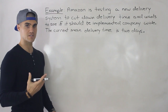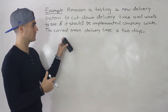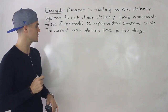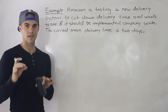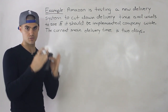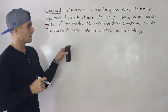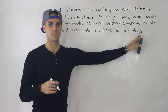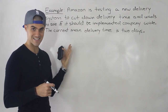Let's do an example. Let's say Amazon is testing a new delivery system to cut down delivery time and wants to see if it should be implemented company-wide. The current mean delivery time is believed to be two days. With differentiating between one-tail and two-tail tests, you have to really read the question carefully. In this case, we're not just looking for whether the delivery time is going to be different than two days.